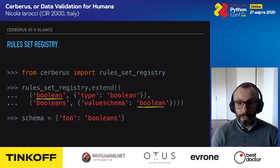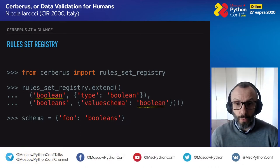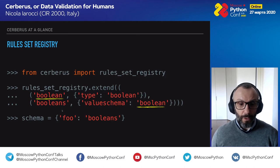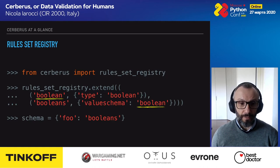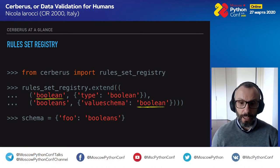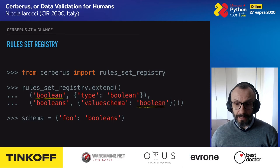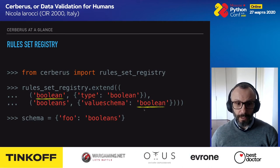There is also a rules set registry. You can define a shortcut — for example, 'boolean' — so that instead of writing the full type: boolean definition every time, you just use 'boolean' as a shorthand. You can even use shortcuts within the rules set registry itself — for example, within a value schema you can reference the boolean shortcut.